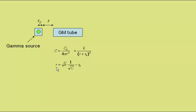We can rearrange this to R equals the square root of the constant times 1 over the square root of the count rate minus R₀, the distance from the outer side of the casing to the source itself.